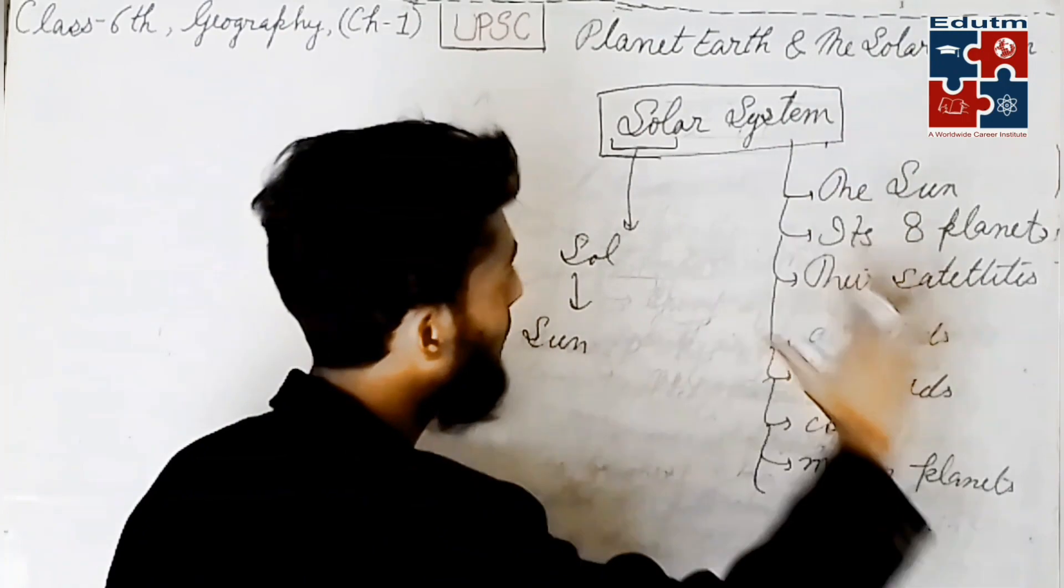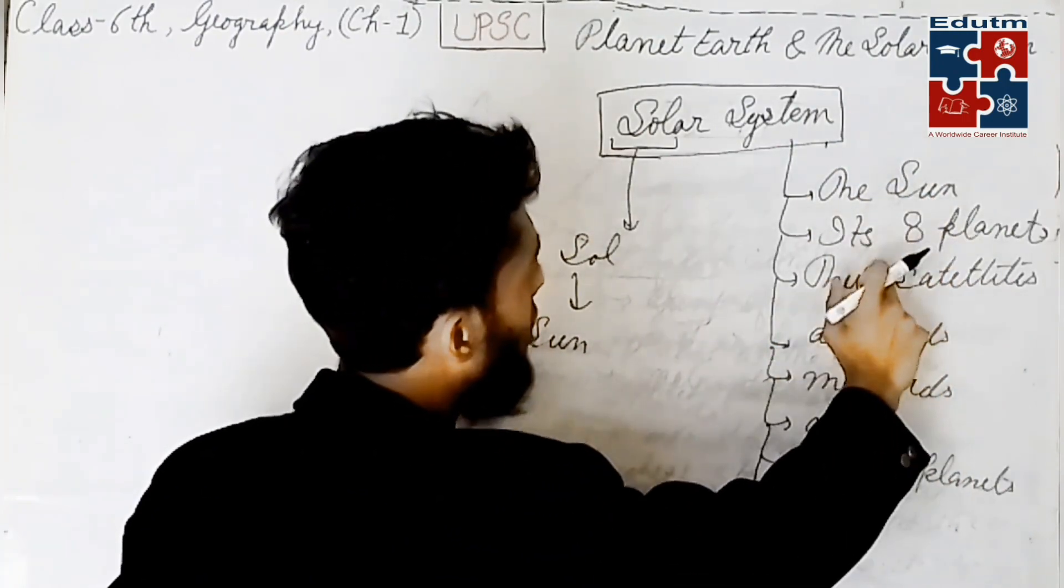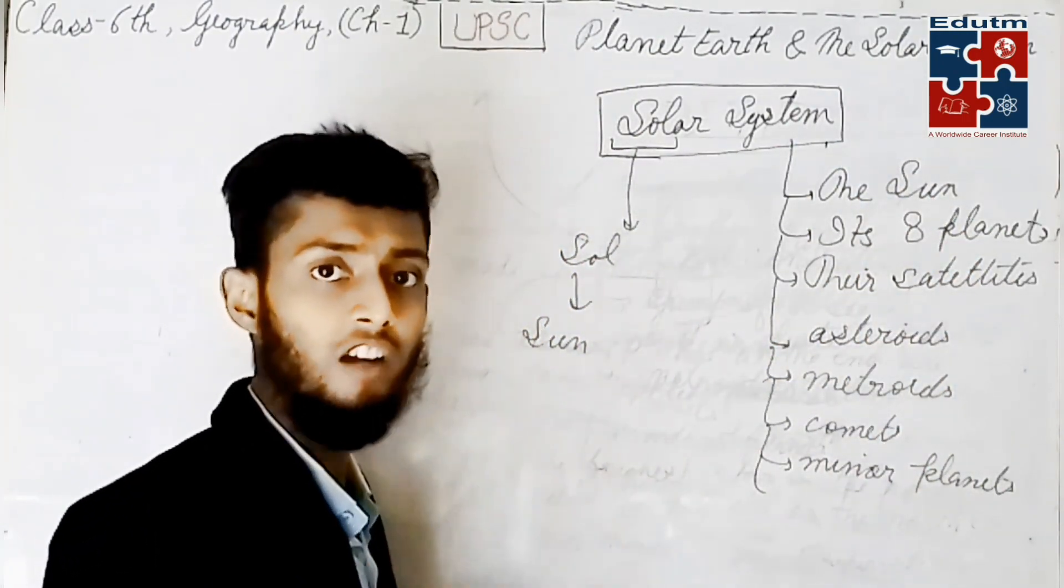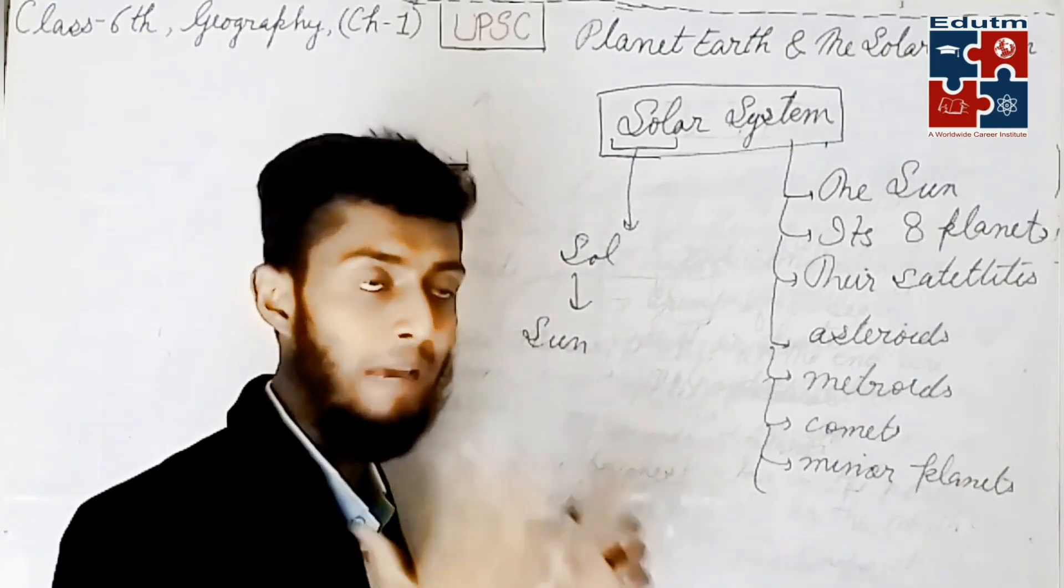Now children, we will discuss everything one by one. The sun, about the sun, about the eight planets. We know the eight planets: Mercury, Venus, Earth, Mars, Jupiter, Saturn, Uranus, Neptune.